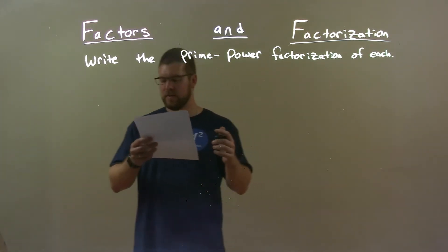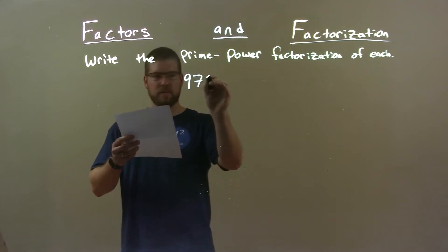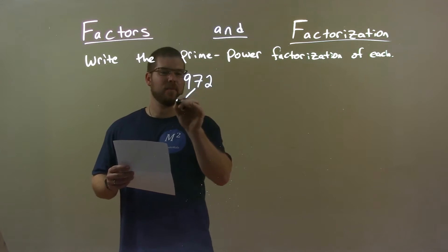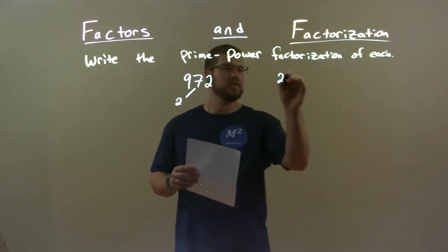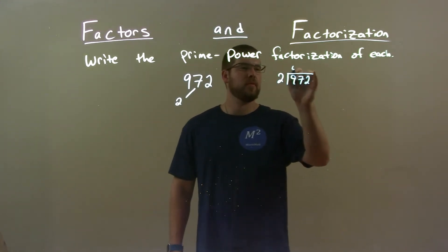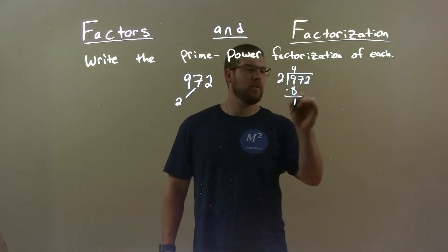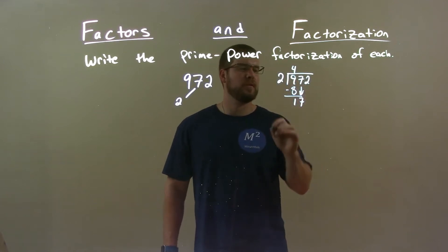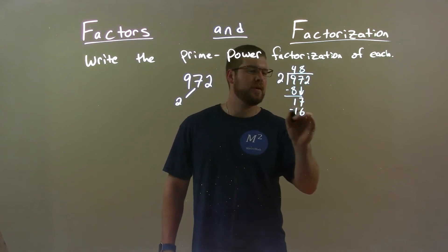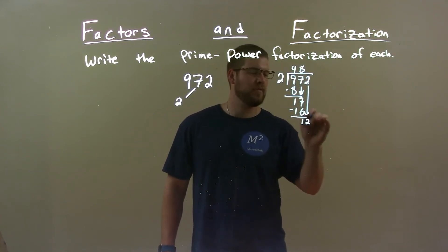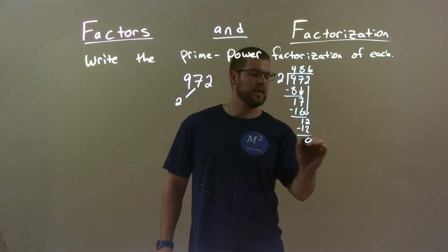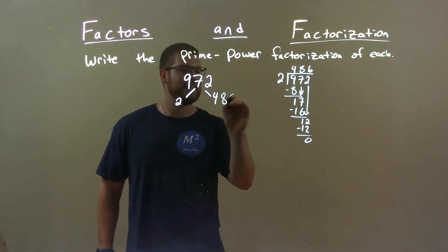So if I was given the number 972, the first thing I see is that since it's an even number, two must go into it. So let's do long division here. Two into nine goes four times, we get eight, subtract it, get one, bring down the seven. Two goes into 17 eight times — eight times two is 16. Subtract it, get a one, bring down the two — that's 12. Two times six is 12, subtract it, get zero. So now we have 486.